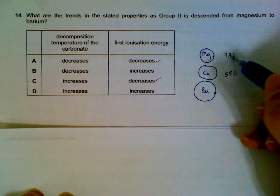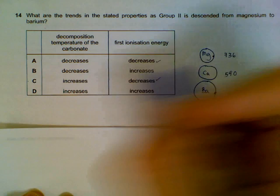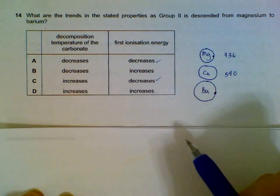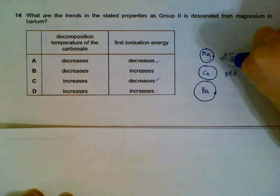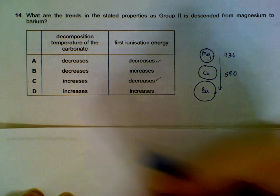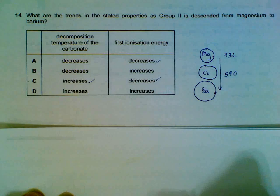If you can't remember the trend, you can refer to the data booklet for some numbers. For decomposition of carbonates temperature, as we go down the group, it is harder to decompose the carbonates. So the temperature to decompose the carbonates will be increasing.